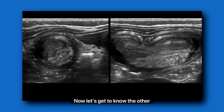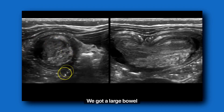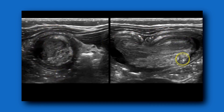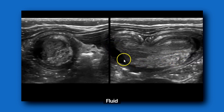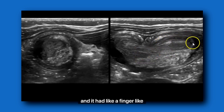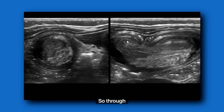It's good to know the other causes of intussusception, like Meckel's diverticulum. Here we have a large bowel intussusception where you can see the mesenteric fat, but there's one thing here: fluid. The ileocolic intussusceptions don't always have fluid, but this one did. And then it had a finger-like projection. They tried to reduce this intussusception many times and couldn't — it kept coming back. So through surgery, they saw that this patient had a Meckel's diverticulum.